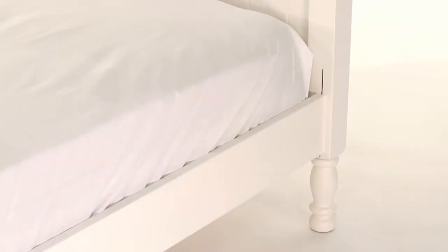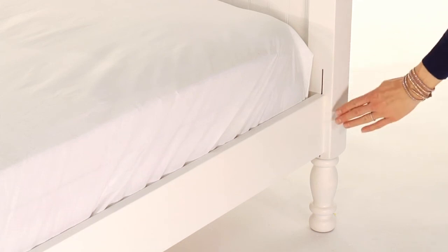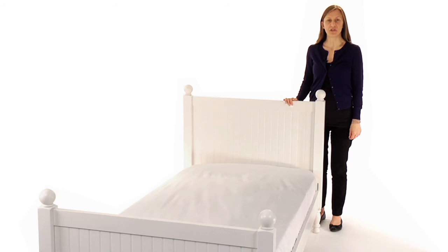The mattress platform can be raised to accommodate our optional trundle or lowered to create a comfortable height for small children. The slat roll foundation allows our beds to be used with or without a box spring.